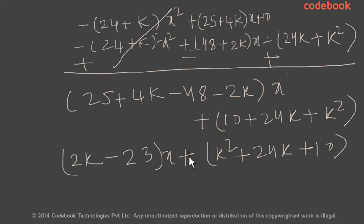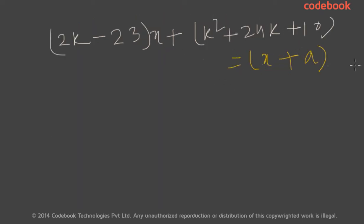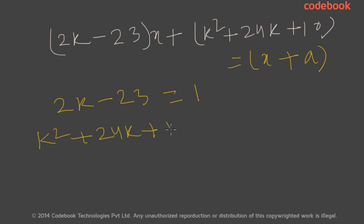Simplifying the remainder gives (2k minus 23)x plus (k squared plus 24k plus 10). We have been given that the remainder is equal to x plus a. Equating coefficients, 2k minus 23 equals 1, and k squared plus 24k plus 10 equals a. Solving: 2k equals 24, so k equals 12.